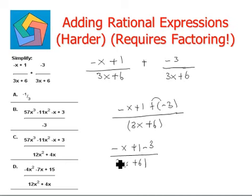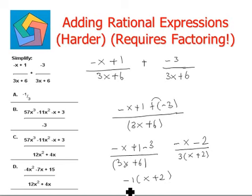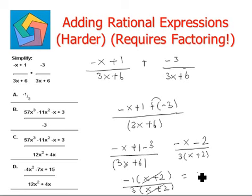Combining the like terms in the numerator, we have negative x minus 2, divided by 3, and we can pull out an x plus 2. From the numerator we pull out a negative 1, leaving us with x plus 2, divided by 3 times x plus 2. We can cross-cancel x plus 2 with x plus 2, and we are left with negative 1 thirds. This is the final answer and can be seen in option A.